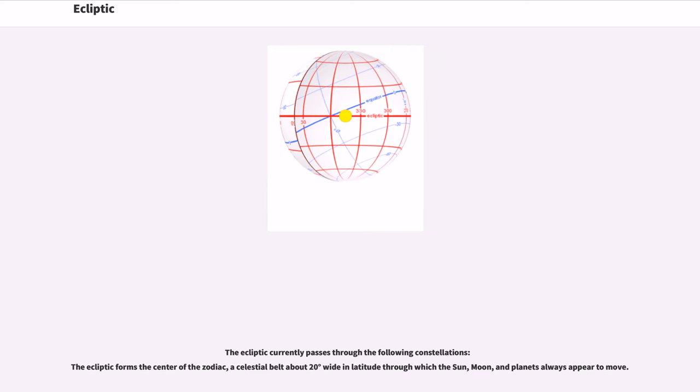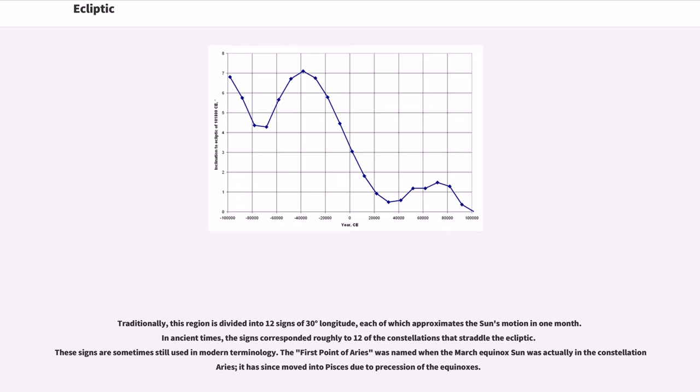The ecliptic currently passes through the following constellations. The ecliptic forms the center of the zodiac, a celestial belt about 20 degrees wide in latitude through which the Sun, Moon, and planets always appear to move. Traditionally, this region is divided into 12 signs of 30 degrees longitude, each of which approximates the Sun's motion in one month. In ancient times, the signs corresponded roughly to 12 of the constellations that straddle the ecliptic. These signs are sometimes still used in modern terminology. The first point of Aries was named when the March equinox Sun was actually in the constellation Aries. It has since moved into Pisces due to precession of the equinoxes.